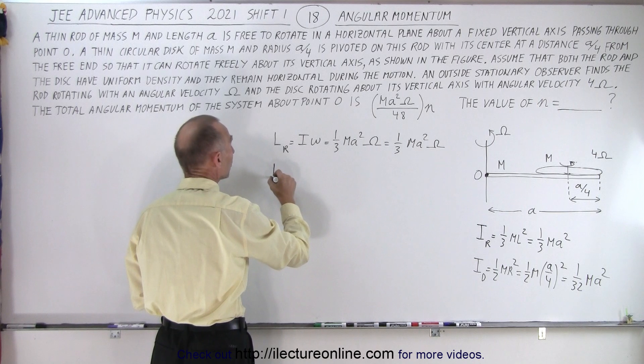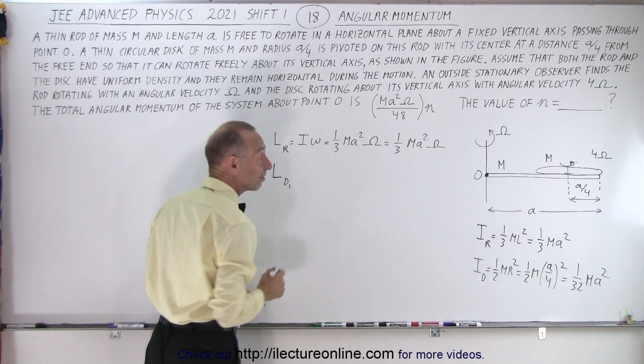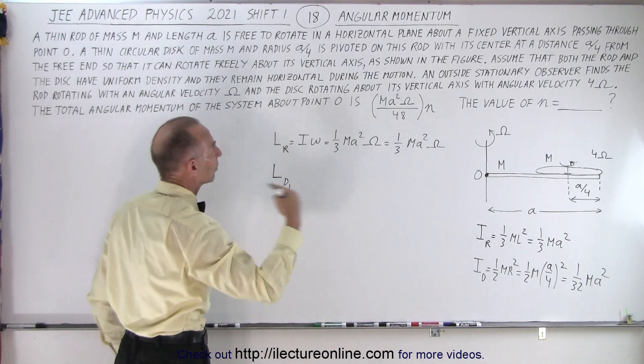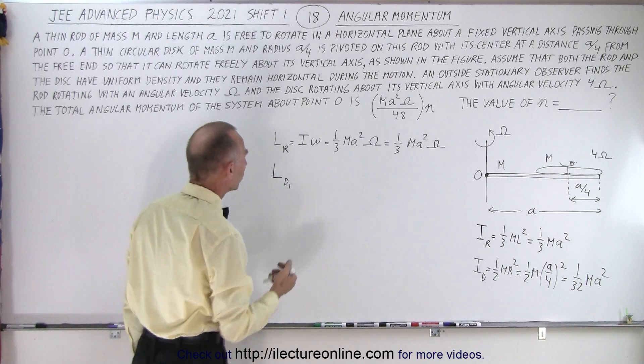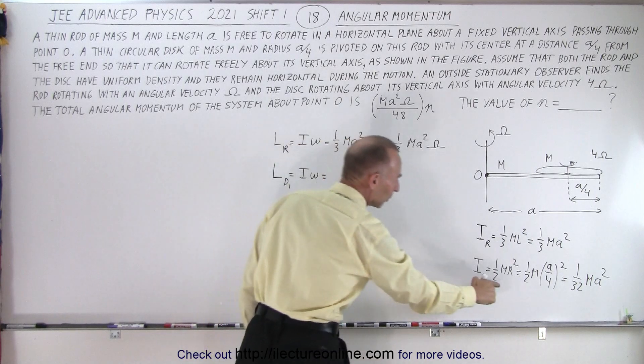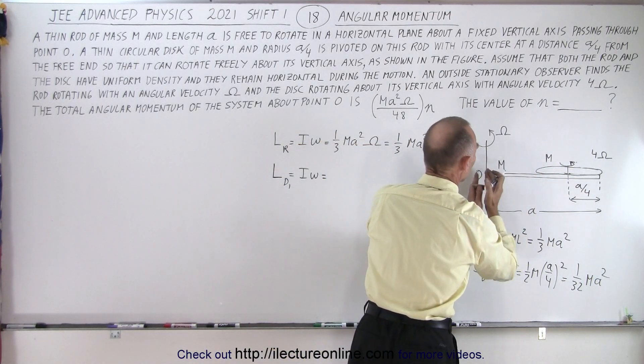The angular momentum of the disk rotating about, so we'll call it d sub 1, the first motion of the disk which is it's rotating about the point O. And so that's going to be equal to i times omega. Now in this case, i is not going to be this. It's going to be a point object this distance away from O.